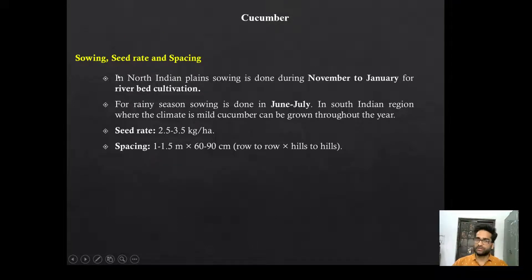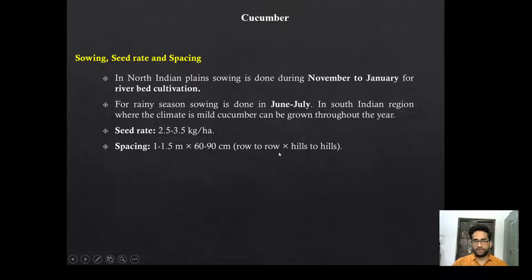Now seed rate, sowing, and spacing. In Northern India, sowing is done during November–January for riverbed cultivation. For the rainy season, sowing is done in June–July. Seed rate of cucumber is 2.5 to 3.5 kg per hectare. Spacing is 1 to 1.5 meter row-to-row by 60 to 70 cm hill-to-hill.